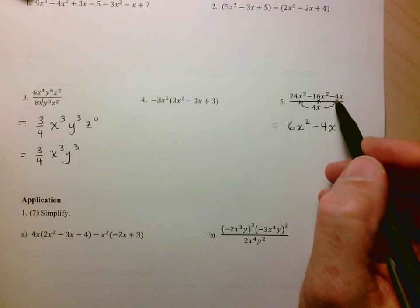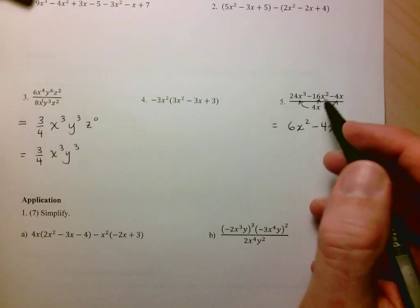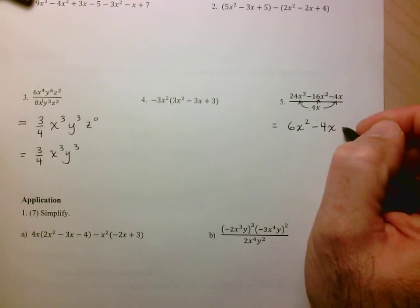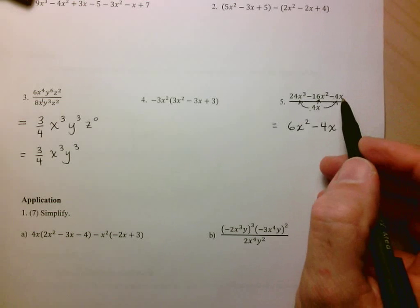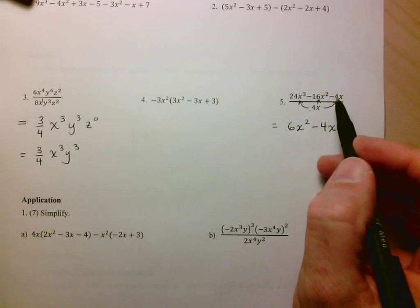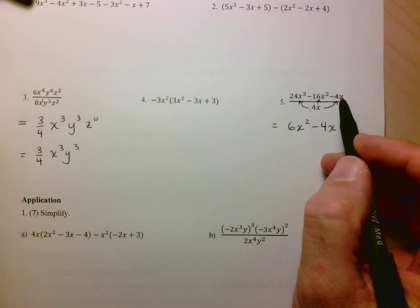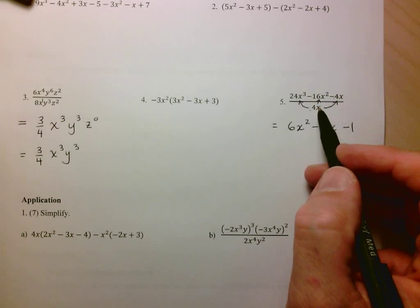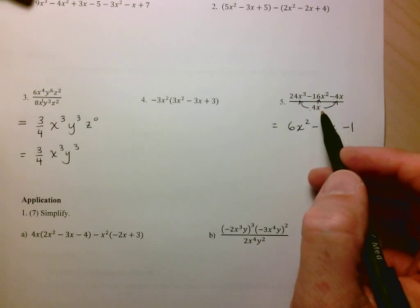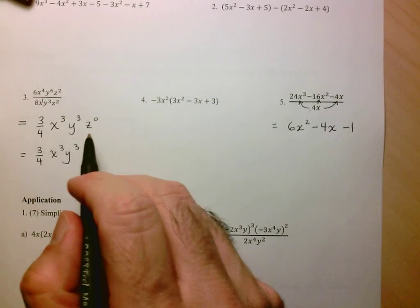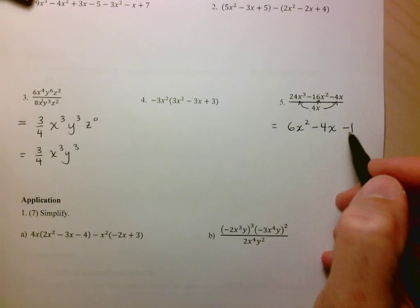For the third term, we have negative 4 divided by positive 4, which gives me negative 1. And then x divided by x — a number divided by itself equals 1. Or using the exponent rules, x to the 1 divided by x to the 1 is x to the 0, which is just 1. So we don't write the x to the 0. There's our final answer.